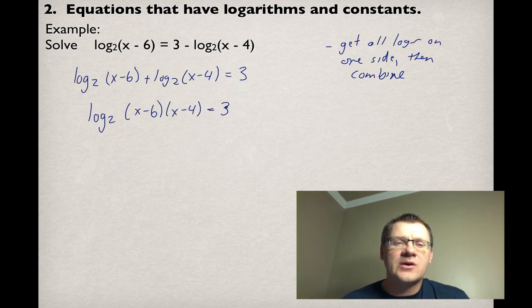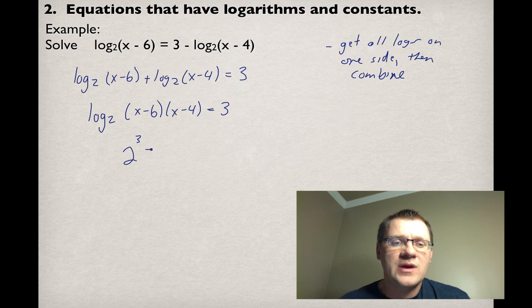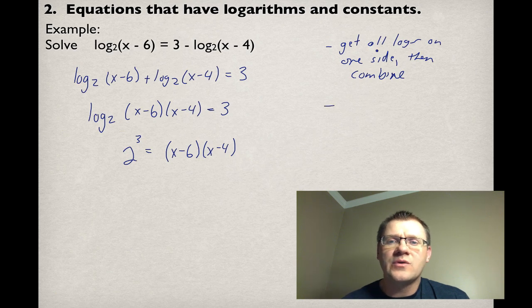Since we don't have a log on both sides of the equation, we have to make sure that we don't just remove this log. But we can write this as an exponential equation. So this is 2^3 = (x - 6)(x - 4). After you combine your logs, you want to rewrite as an exponential equation.